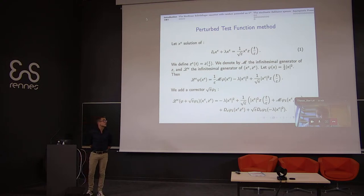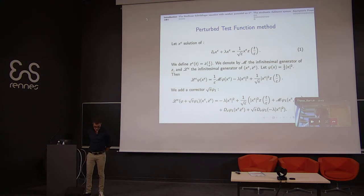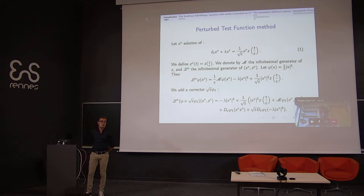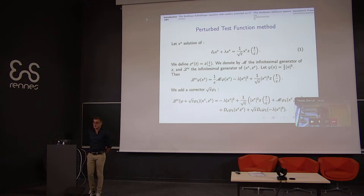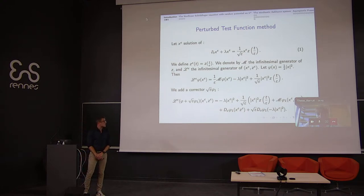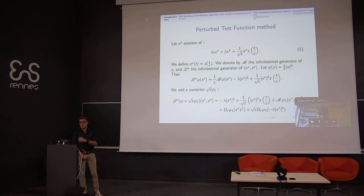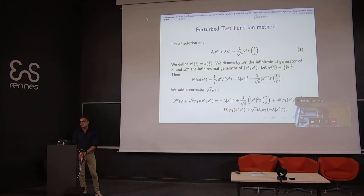The perturbed test function method was introduced by Papanicolaou, Stroock, and Varadhan in 1977, and it is the method used in the majority of diffusion approximation problems. In a simple model, let x-epsilon satisfy this equation where the process z is a random process satisfying several regularity properties that I will detail later.